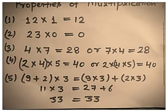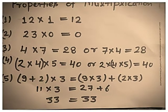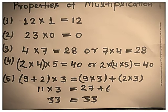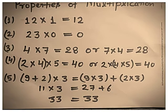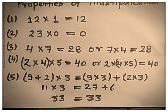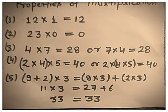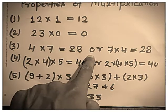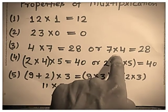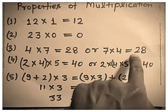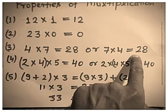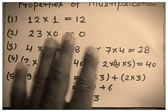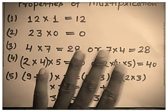Now, the third property: the product of two numbers does not change even if we change the order of the numbers. See, 4 multiplied by 7 — 4 sevens are 28 — or 7 multiplied by 4 — 7 fours are 28. If we change the order of the numbers, the product is the same.